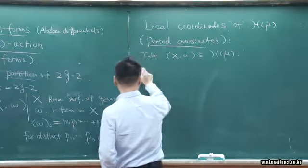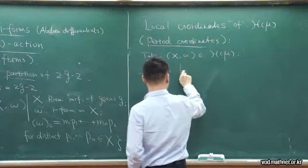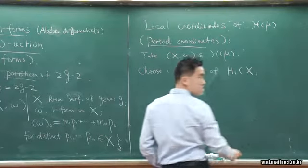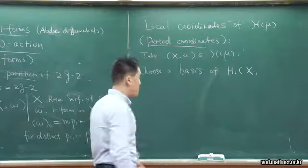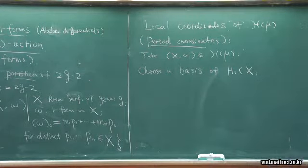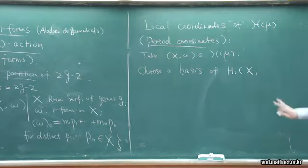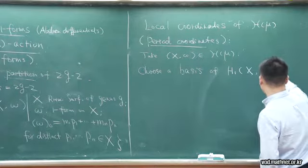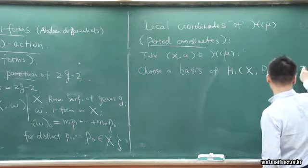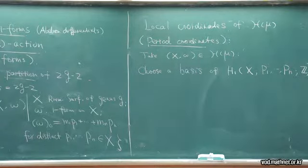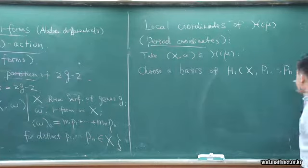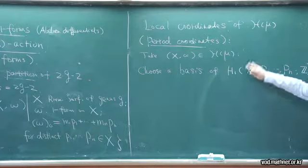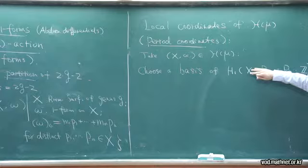Let's first take a basis of the first homology of X relative to the n points P. We take a basis of H₁(X). If you don't label these n points, it just gives you the absolute homology. But now we have relative homology relative to the n marked points. So let's consider P₁ up to Pₙ as markings on X with ℤ coefficients. The H₁ of absolute homology should be 2g-dimensional since X is of genus g.